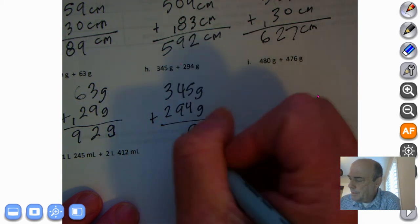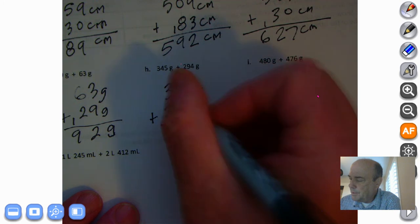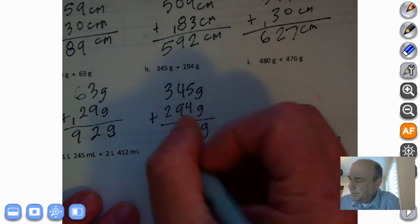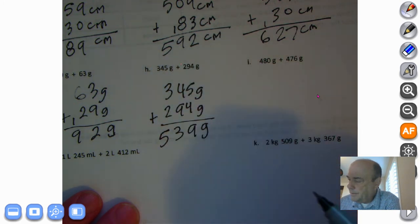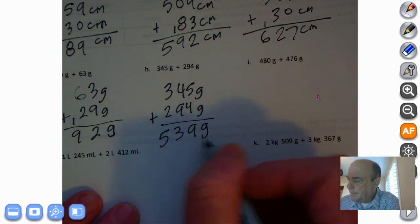Five plus four is nine. Nine tens plus four tens is thirteen tens, and three hundreds plus two hundreds is five hundreds. So there is our answer, 539 grams.